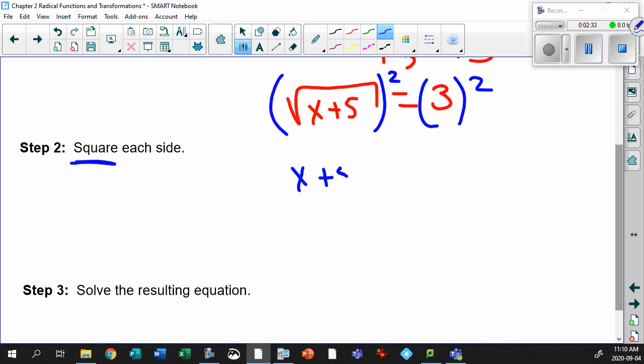So you got x plus 5 equals to 9. Simple. Then all you got to do is solve. Okay. Solving meaning subtract 5 from both sides. There you go. You got x equals to 4. And there's your solution.